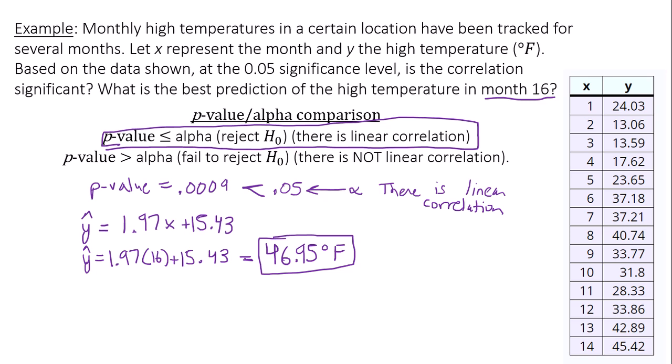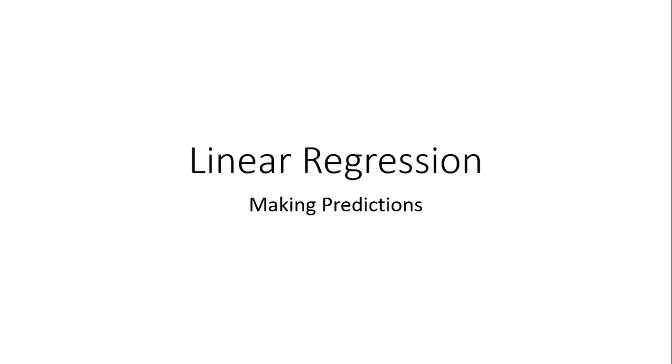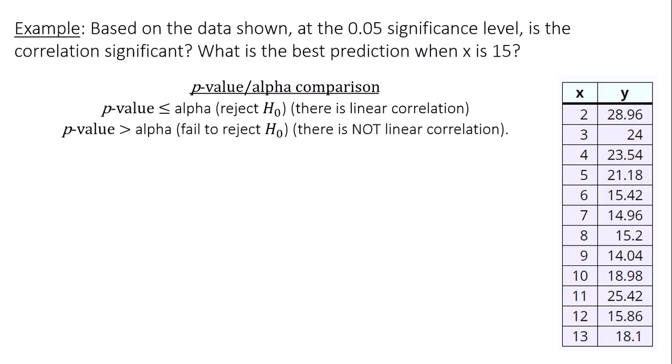Let's try another data set and see if we can make predictions with it using the regression equation. Based on the data shown at the 0.05 significance level, is the correlation significant? What is the best prediction when X equals 15?